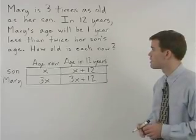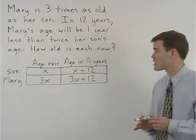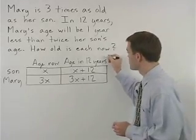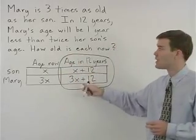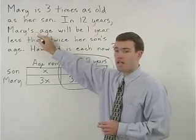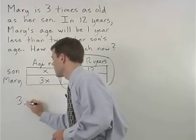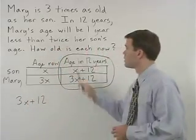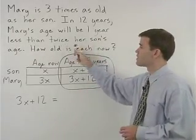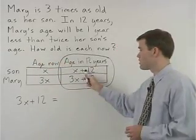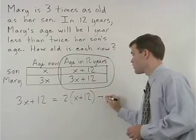Reading through the second sentence, we start with: in twelve years. That tells us that all the information in our equation is going to come from the age in twelve years column. So in twelve years, Mary's age — that's three x plus twelve — will equal one year less than twice her son's age. That's two times (x plus twelve) minus one.